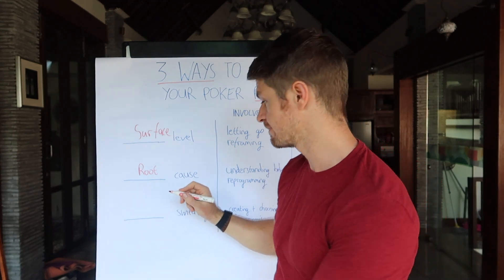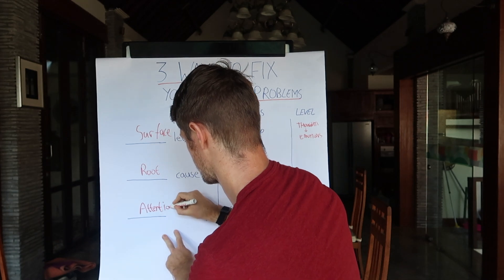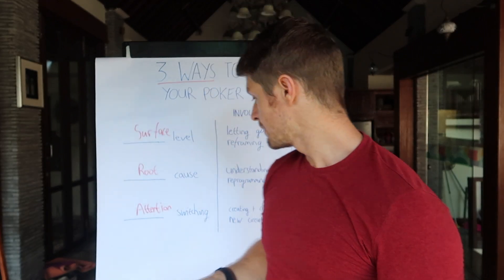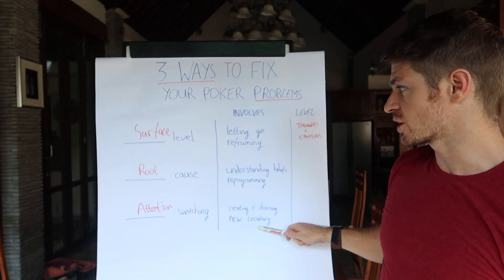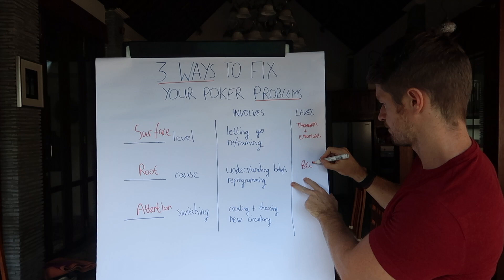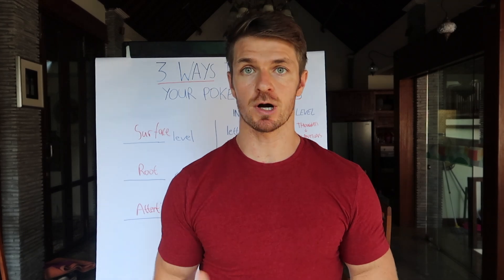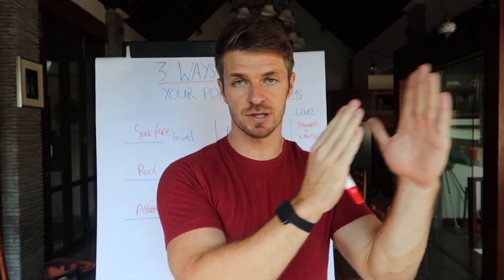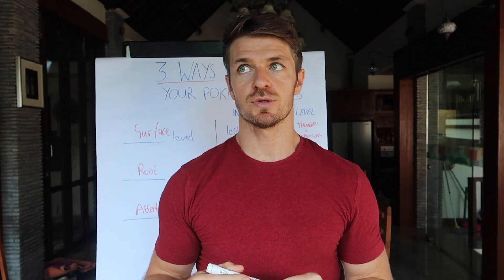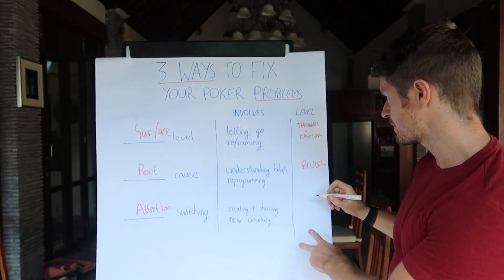The final one is called attention switching. This is all about creating and choosing new circuitry. The root cause level was about beliefs; attention switching is where you basically, rather than trying to fix the problem, put your attention onto something new — a new thing that you want. It's replacing the old with the new. This is where you decide on how you want to act and you start acting that way. This operates on one of the deepest levels — the identity level.